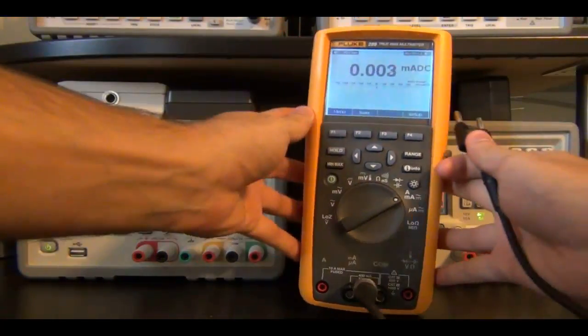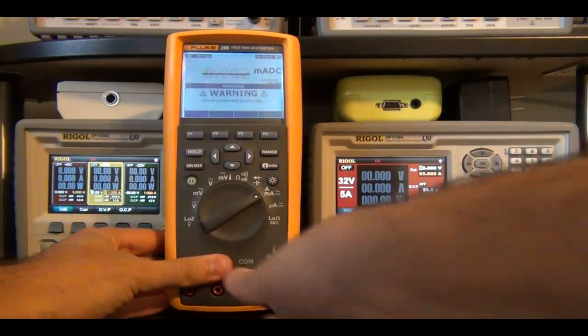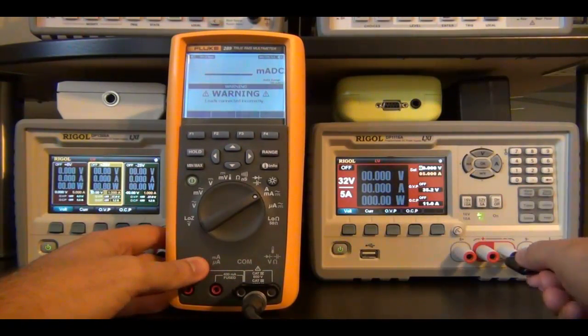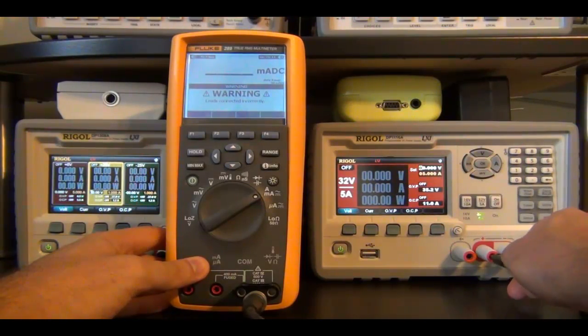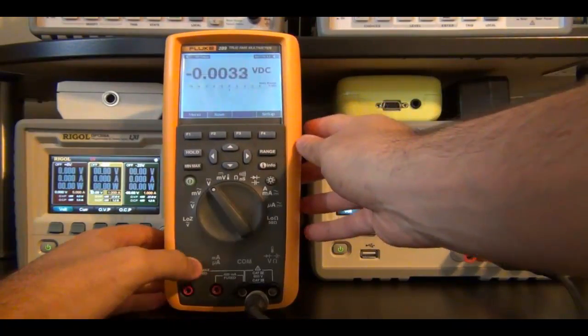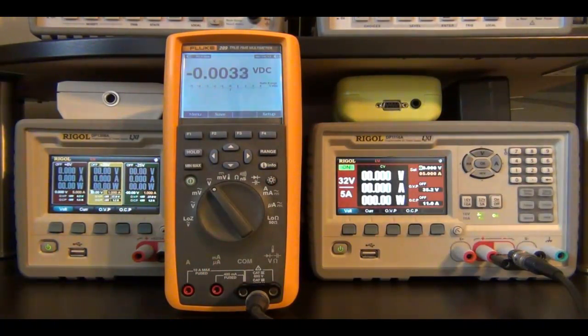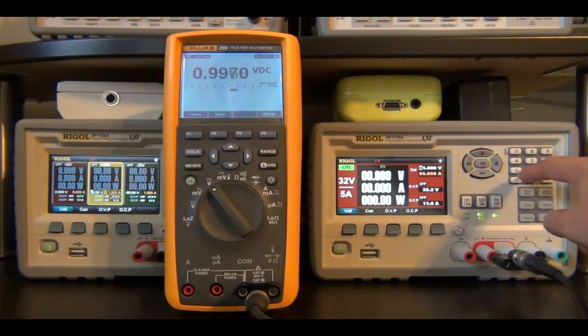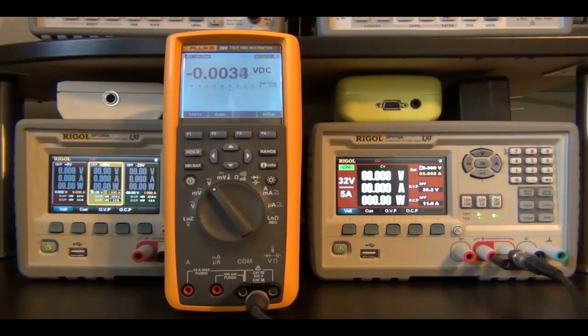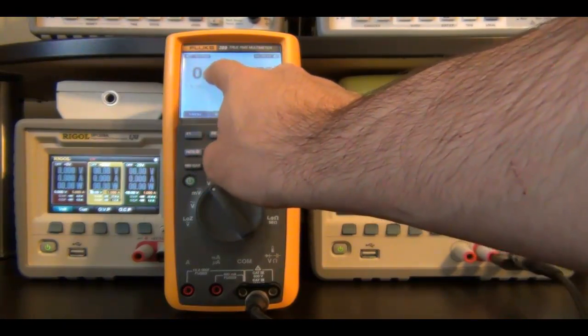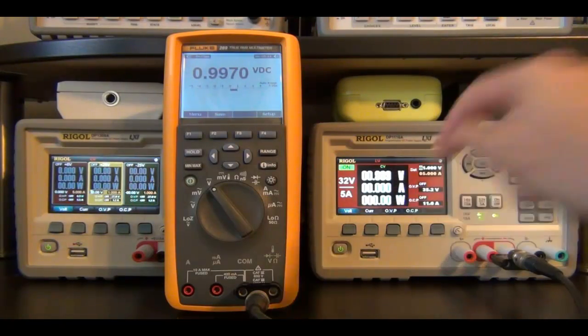So now let's check the voltage accuracy when the output is actually enabled. We're going to go back to voltage mode, connect it up, and enable the output. Now the output is at 0 volts, and it's reading almost 0. Let's try 1 volt. It says 0.997, so it's off by about 3 millivolts, which was exactly the 3 millivolts offset it had at the beginning. This guy says 0.997, and this guy says 0.998. So the readout voltage is very accurate.